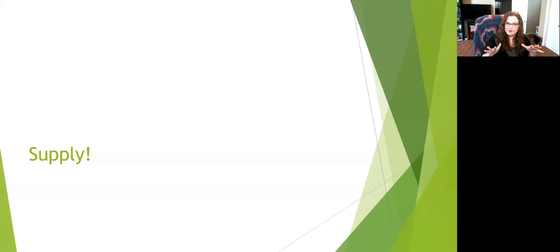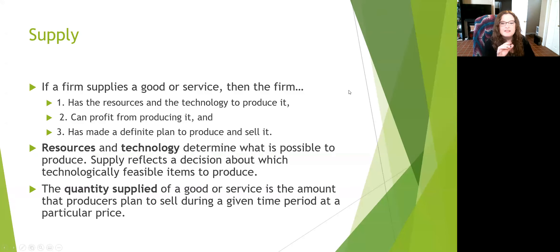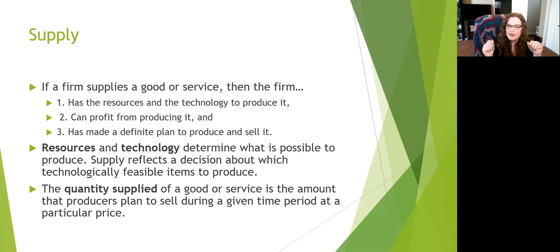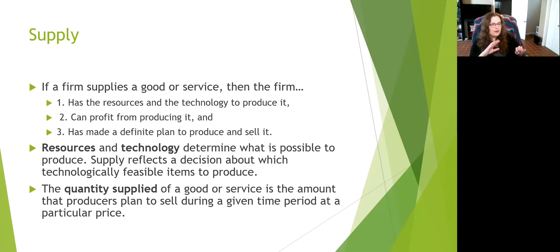For the next half hour of your life, take yourself out of the mindframe of a person that buys something and put yourself in the mindframe of someone that makes something that you plan to sell. So, what is supply? There are three attributes to supply. Remember in demand, you have to have the money for it, you have to have a plan to buy it, and you have to want it. In supply, we also have a number three.